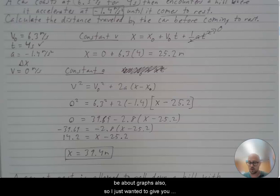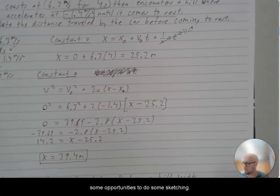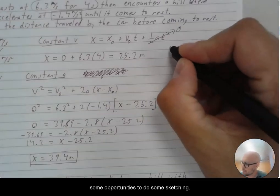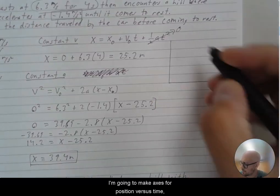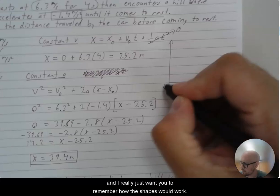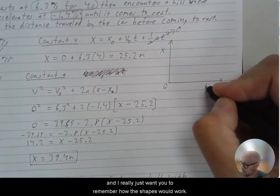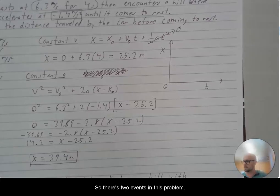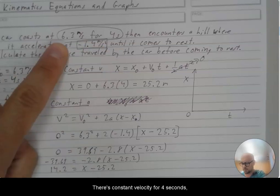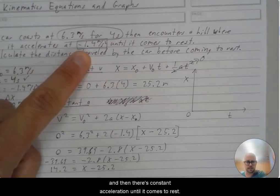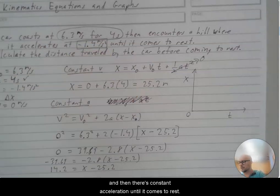Okay, now I said this was going to be about graphs also. So I just wanted to give you some opportunities to do some sketching. I'm going to make axes for position versus time. And I really just want you to remember how the shapes would work. So there's two events in this problem. There's constant velocity for four seconds. And then there's constant acceleration until it comes to rest.